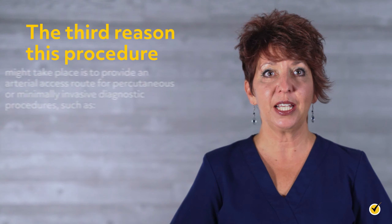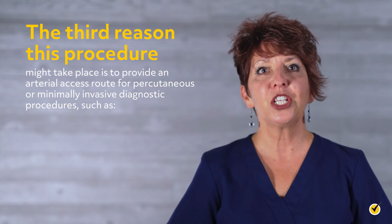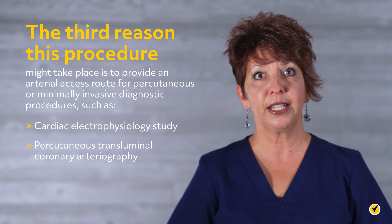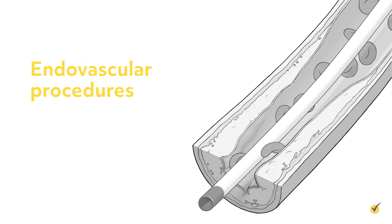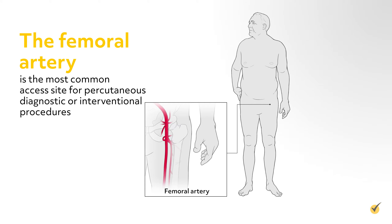The third reason this procedure might take place is to provide an arterial access route for percutaneous or minimally invasive diagnostic procedures such as cardiac electrophysiology study, percutaneous transluminal coronary angiography, and endovascular interventions such as percutaneous coronary intervention. Endovascular procedures are used to treat vascular disease and other conditions involving blood vessels by threading a catheter through a percutaneous needle puncture into a blood vessel. The femoral artery is the most common access site; however, due to reduced risk of complications, radial access is increasingly being used, with alternative sites including the brachial, axillary, posterior tibial, and pedal arteries.